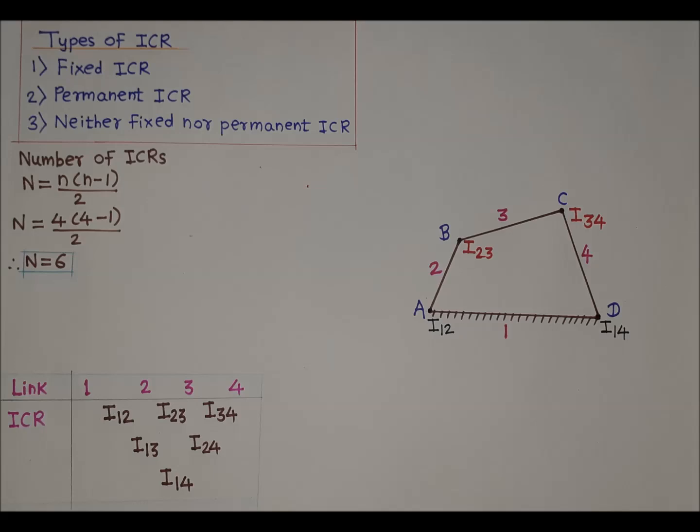When this mechanism operates, links will change their positions, so the positions of points B and C will change. Hence ICR i23 and ICR i34 will change their position. But i23 will always be at the turning pair between link two and three, so it is known as a permanent ICR. Similarly, i34 will always be at the turning pair between link three and four, so it is known as a permanent ICR. Fixed ICRs never change their position; permanent ICRs change position but are always at the joint of the respective links.